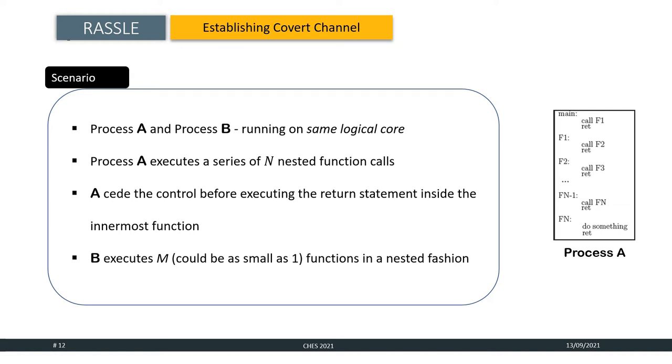B executes M functions also in a nested fashion. As both process A and B share the same RAS, the return address of process B will push out some of the return addresses of A or more specifically N minus M number of return addresses for process A will be pushed out of the stack. When the control again goes back to process A, it can easily understand that some of these return addresses has been pushed out of the stack by measuring the execution time of its defined function depths.